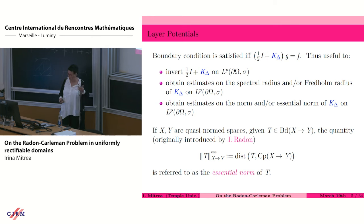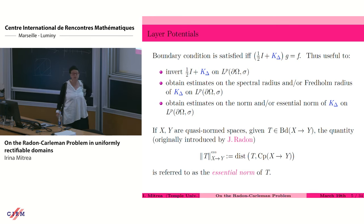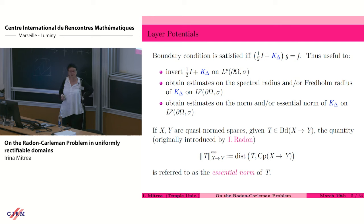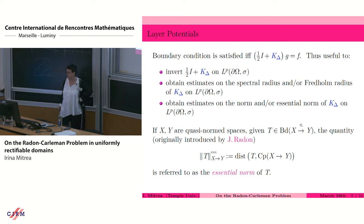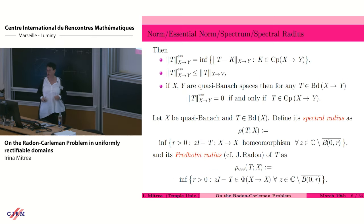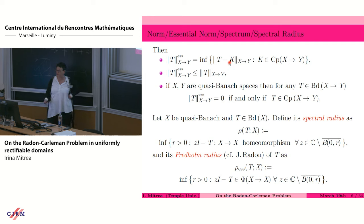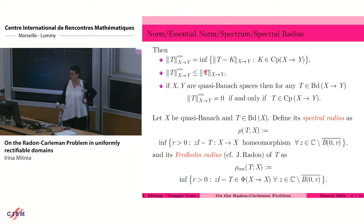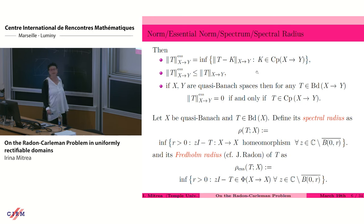These are concepts introduced by Radon in connection with studying an elliptic boundary value problem — specifically the Dirichlet problem for the Laplacian — in so-called Radon domains in two dimensions, going back to around 1919. If X and Y are quasi-norm spaces and we have a linear and bounded operator from X into Y, the quantity we're looking at — the distance between the operator T and the space of compact operators acting between X and Y — is referred to as the essential norm of T. The essential norm is the infimum of the operator norm differences between T and K, as K ranges over the set of compact operators.